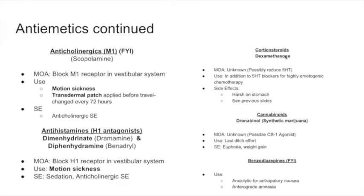The next class of antiemetics is corticosteroids, specifically dexamethasone. Dexamethasone is the only corticosteroid used for nausea and vomiting. It is not really known how it decreases nausea and vomiting, but it possibly reduces serotonin release. It is used in addition to serotonin blockers like ondansetron for highly emetogenic chemotherapy. The key side effect to stress for this exam is the GI side effect — peptic ulcer disease.